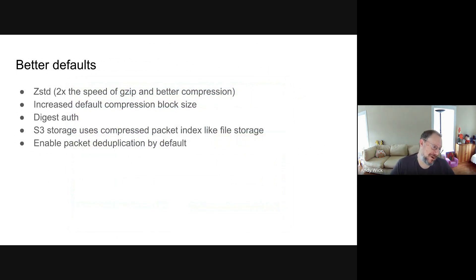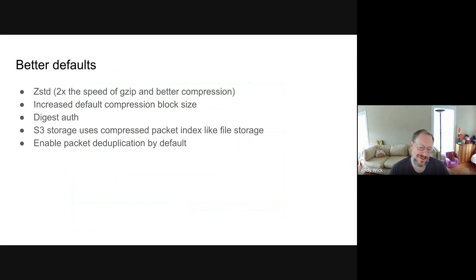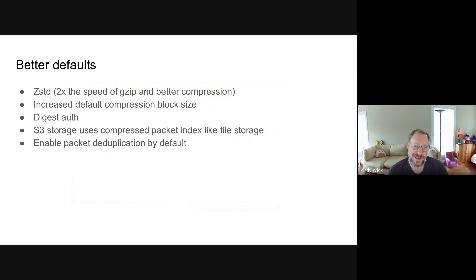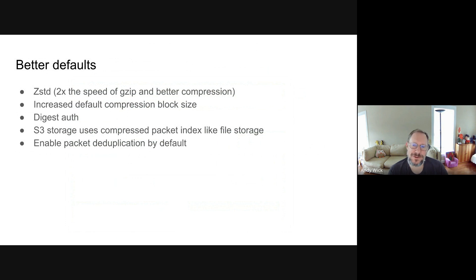We're also changing our defaults. We talked about this at the last Archimede — people want Arkemi to have the best defaults when it's installed without having to go through the config file. We're making ZStandard the default compression and turning on compression by default for your PCAP files. ZStandard is at least twice as fast as the gzip library, and it actually has a slightly better compression ratio at default settings. We're also going to increase the default compression block size so you get even better compression — usually 1% to 2% improvement with no CPU cost.